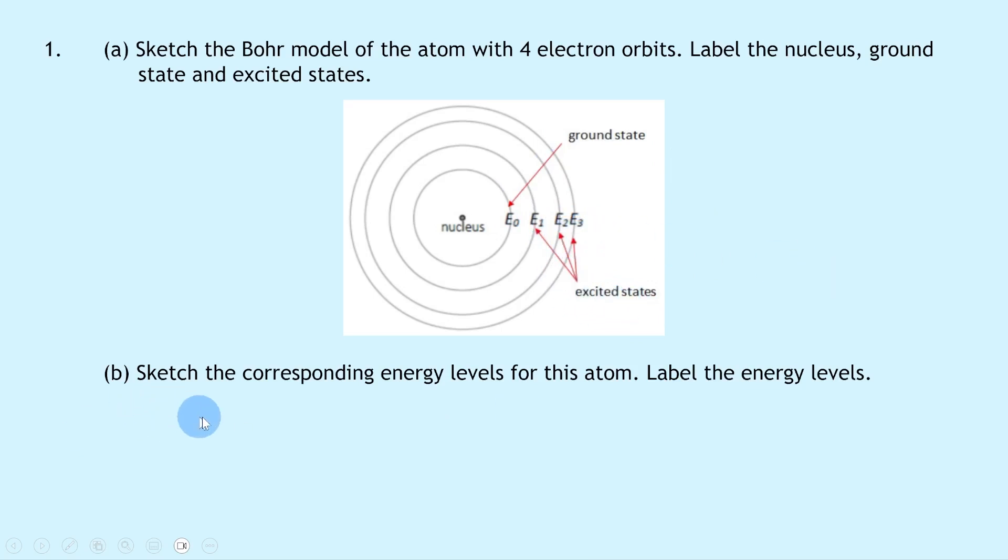Part B says to sketch the corresponding energy levels for this atom and label the energy levels. The corresponding energy levels would be straight horizontal lines which would look something like this, where we've got the ground state E0 down the bottom.